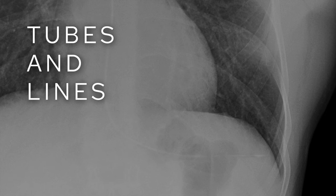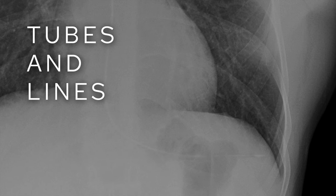I then look at all the tubes and lines and make sure they're sitting in the right place. Check out the video I filmed on assessing NG tube placement. This is a really important thing to get out of the way early — make sure all the tubes and lines are in the right place, and that there are no other foreign bodies on the film that shouldn't be there. Especially on busy ICU films, take the time at the beginning to make sure everything you see can be accounted for and everything is where it should be.